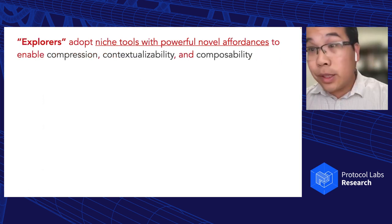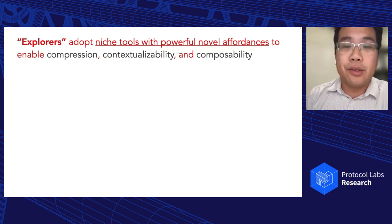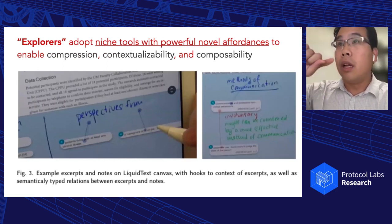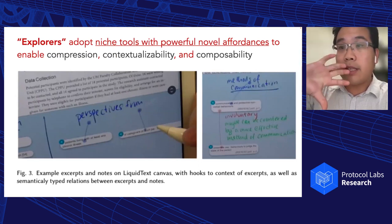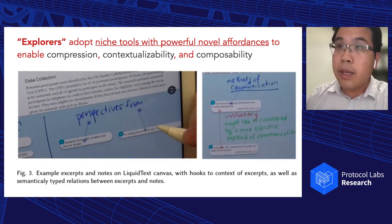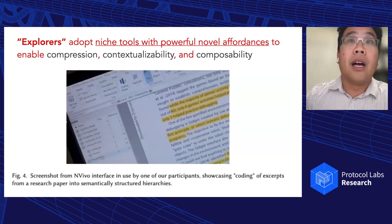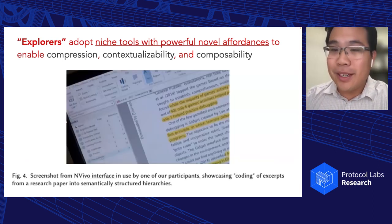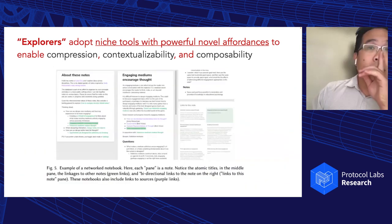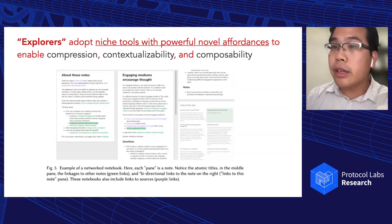There are also other more specialized tools that are mainstream. We call users 'explorers' when using tools like LiquidText, which allows you to pull out these excerpts and then create structured links between items — giving you compression, composability, and contextualizability since you can jump back to annotations. There's also repurposing of qualitative data analysis software, and adoption of new tools for thought like Roam Research, Obsidian, and Logseq.